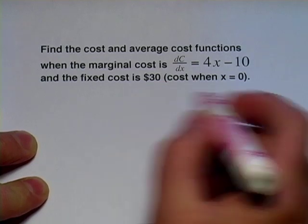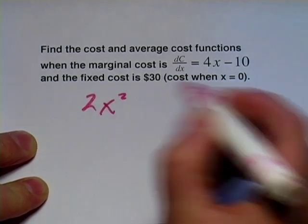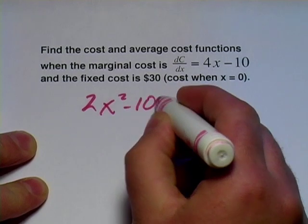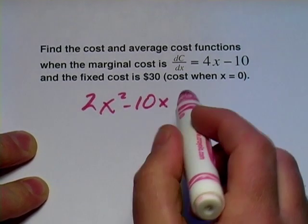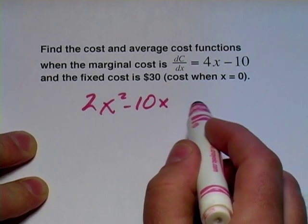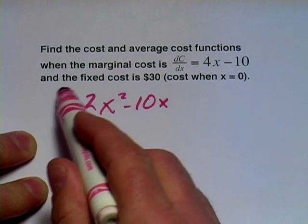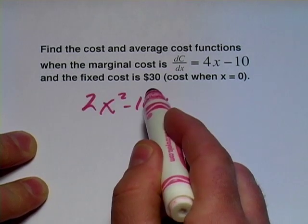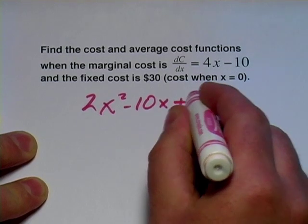So I'll do that right now. That'll be x squared, we need a 2 in front of there, and the minus 10 just becomes minus 10x. And then usually when you take an antiderivative, you might put a constant after it, a plus c, but in this case we know the constant. It says the fixed cost is $30, that's the cost when x equals zero. That's our constant, we're just going to put that in.